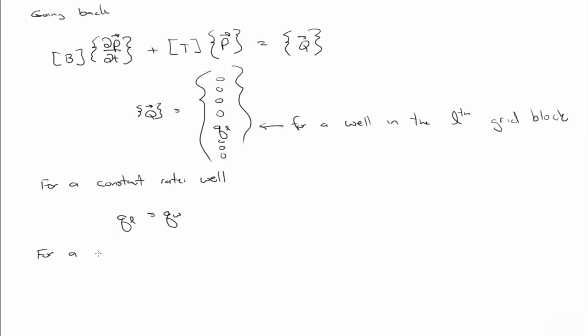For a pressure constraint, then Q at L is equal to minus J at L times PL minus P at the well, right? So P at the well in a pressure constrained well, P at the well is known. J at the well is the productivity index, which you can compute, and of course P at L is what you're solving for.